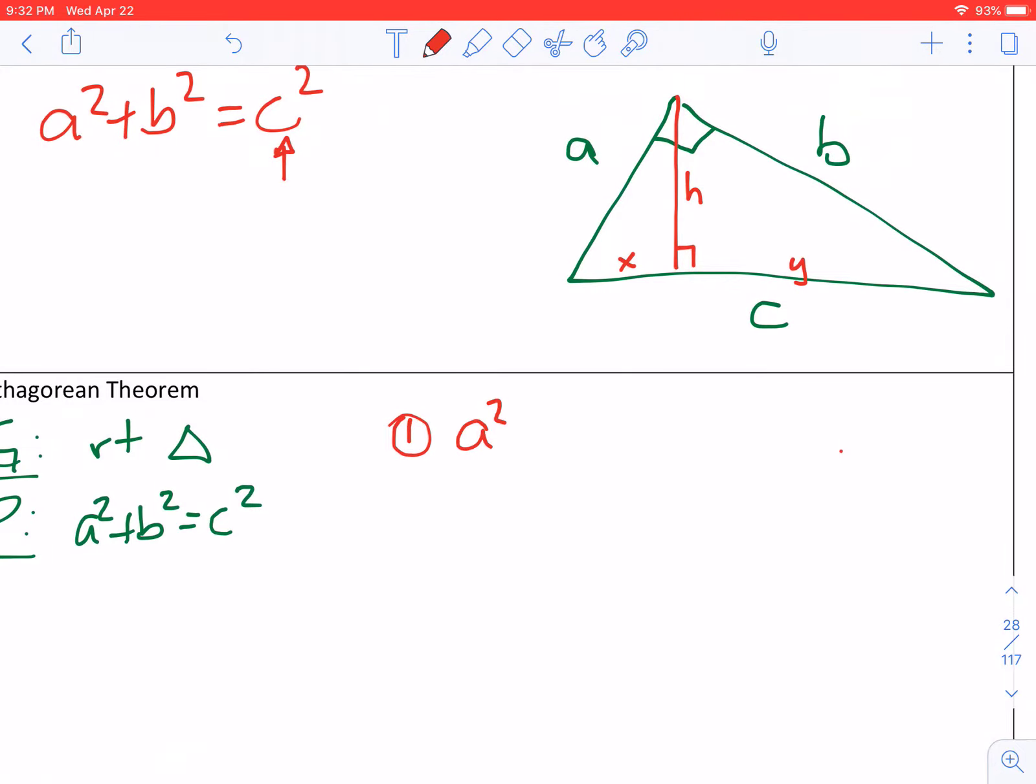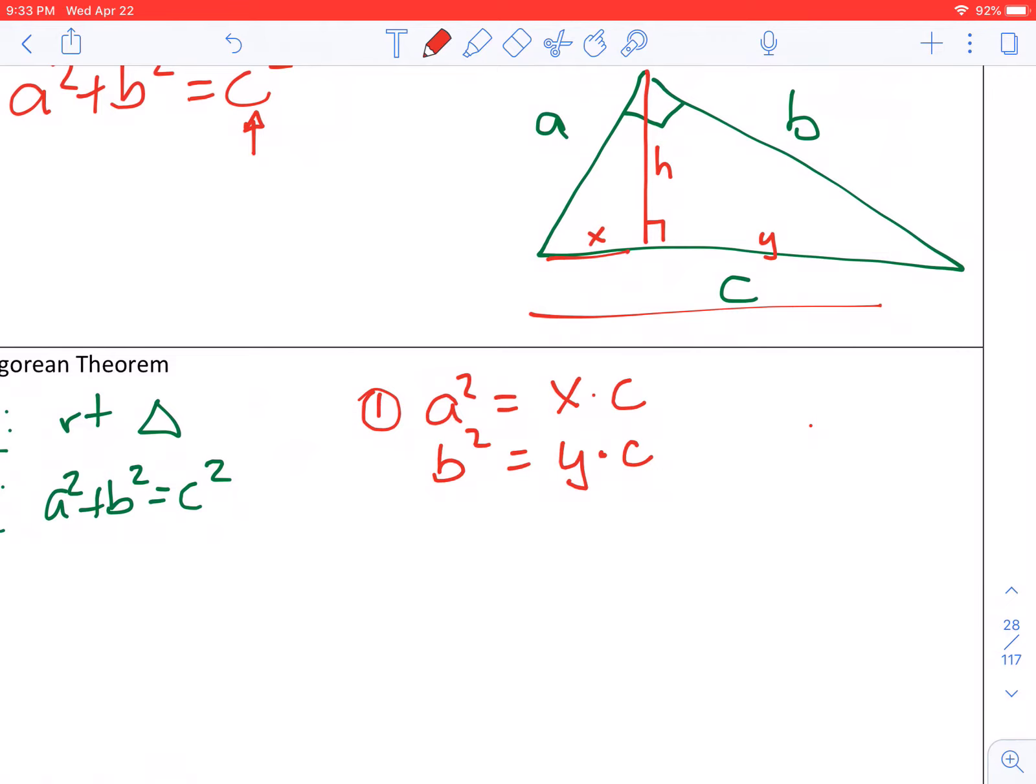All right. We know that if we have our right triangle, that the leg, the short leg, is the geometric mean between X and C. And we also know that the long leg is the geometric mean between Y and C.